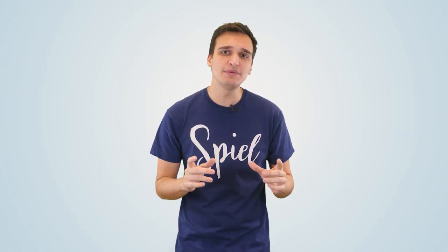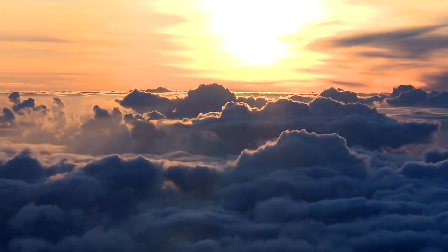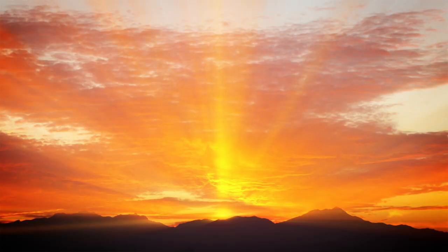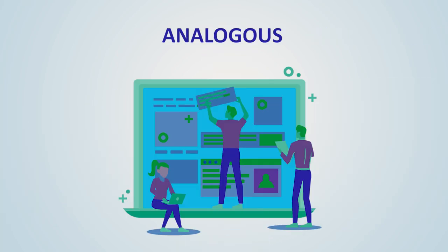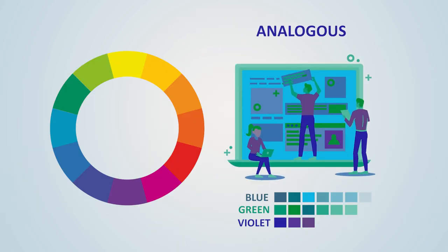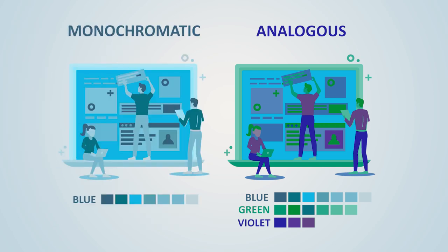Analogous color schemes are commonly found in nature. For example, the orange, yellow, and red colors are often seen at sunrise and sunset. Analogous color schemes, like monochromatic ones, are also great for creating a strong sense of harmony and elegance, yet provide more contrast and vibrancy when compared with color schemes that rely on using different shades of just one color.